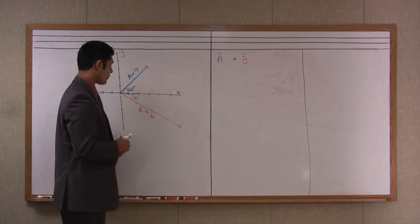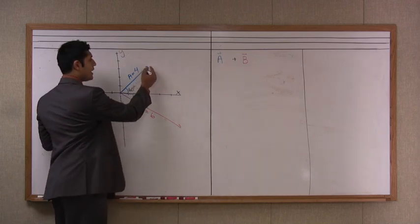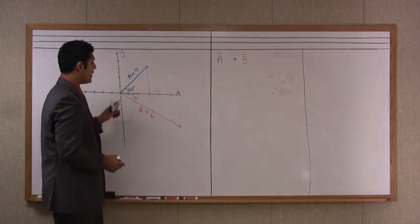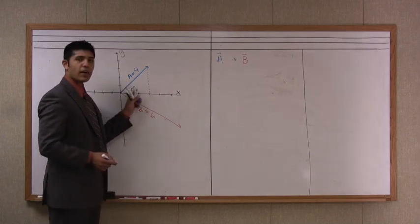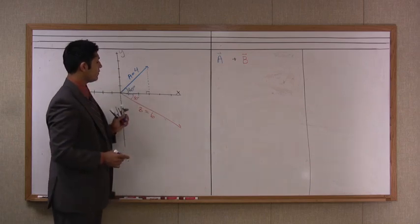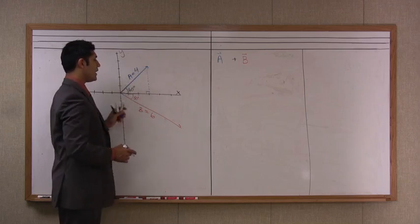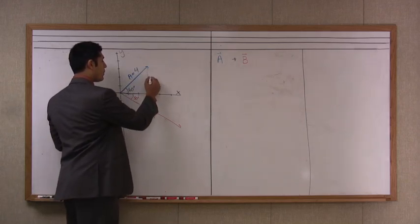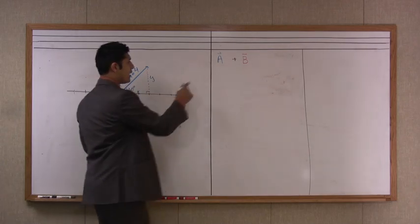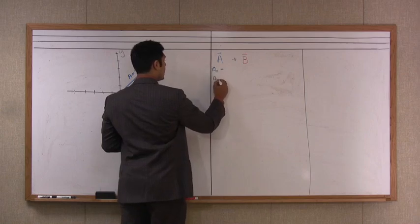So the first step I like to do is I like to drop a dotted line from vector a to the x axis and that closes off our angles, our 60 degree angle, and provides us with a right angle. And now what we can see here is that our hypotenuse is 4 and we need to find out what the y component is and what the x component is. And so let's write that into this panel here under the a and we'll write ax equals and ay equals.